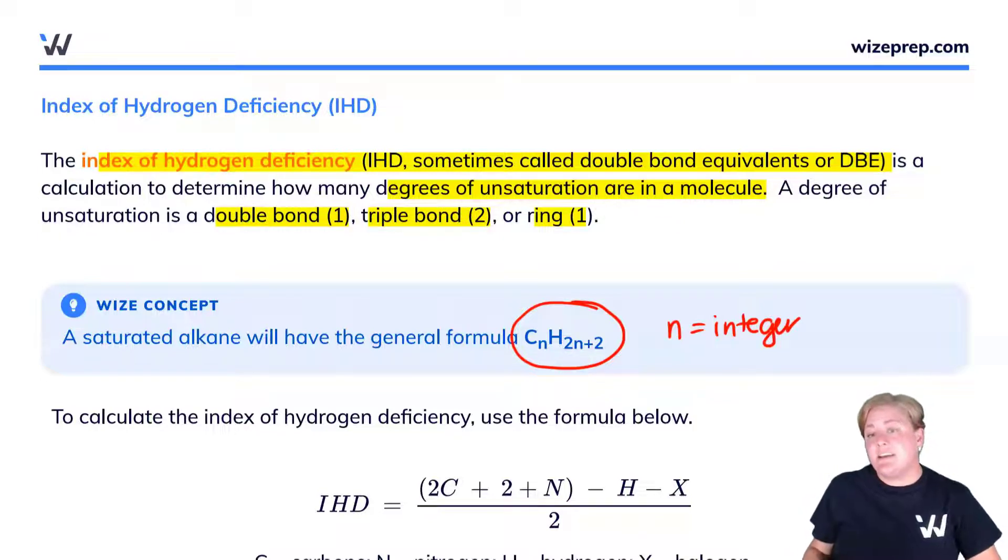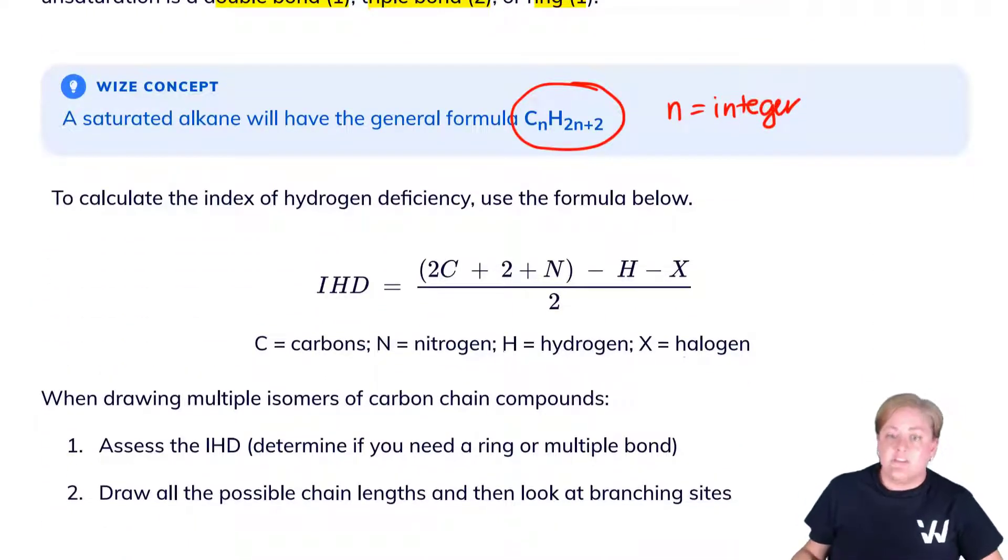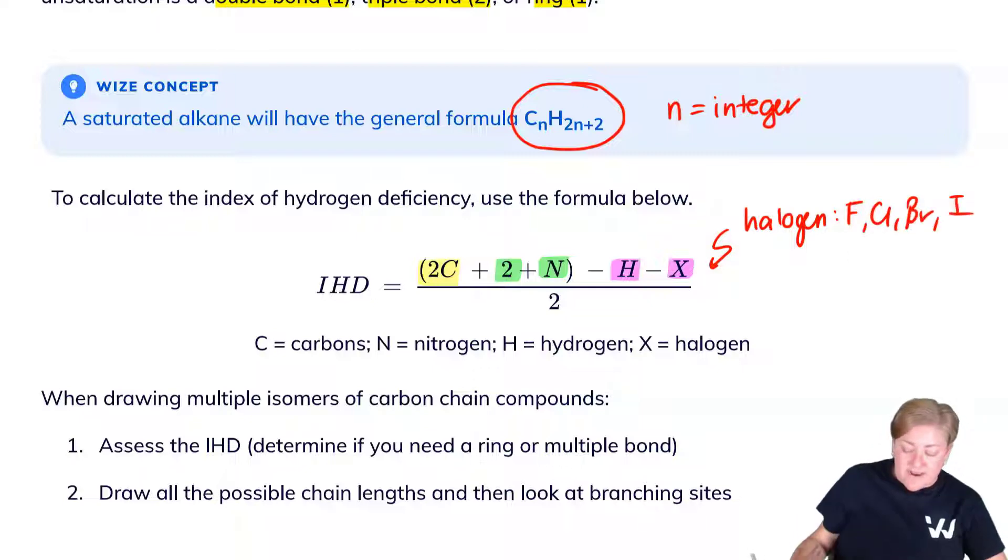Now the good news is it's a pretty quick calculation in order to work this out. To calculate this, we use this index of hydrogen deficiency calculation, where you have 2C + 2 + N - H - X, all divided by 2. Where C is carbons, N is nitrogens, H is hydrogen, X is halogen. Remembering that X here means a halogen, where the halogens are fluorine, chlorine, bromine, and iodine. You'll notice that oxygen does not factor into this formula. Watch out for that trap. That's a really common mistake students will want to make.